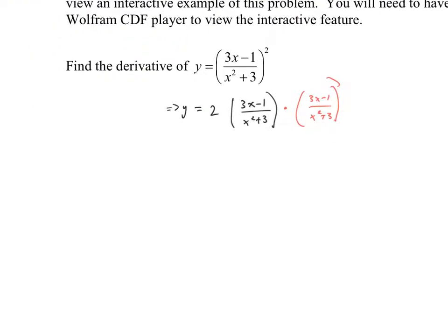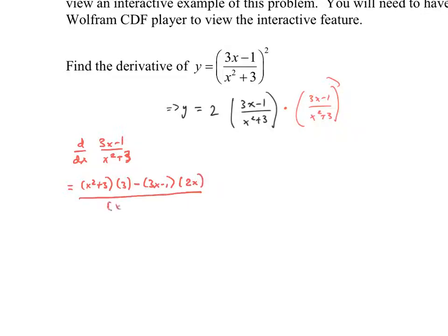Let's work out the derivative of (3x - 1)/(x² + 3) as a side problem. Using the quotient rule: it's the low times the derivative of the high, minus the high times the derivative of the low, all over the low squared. So that's (x² + 3) times 3 — since the derivative of (3x - 1) is 3 — minus (3x - 1) times 2x — since the derivative of (x² + 3) is 2x — all over (x² + 3) squared.